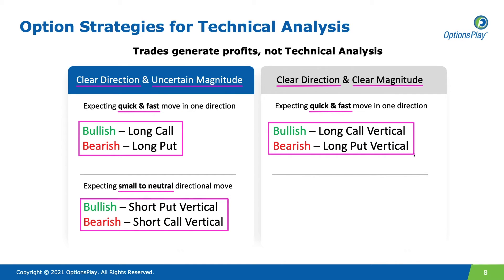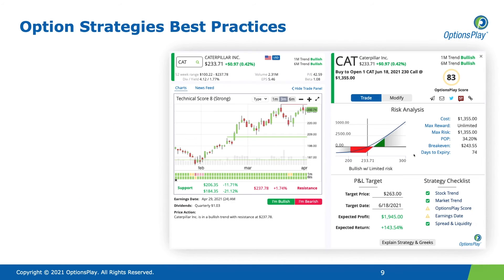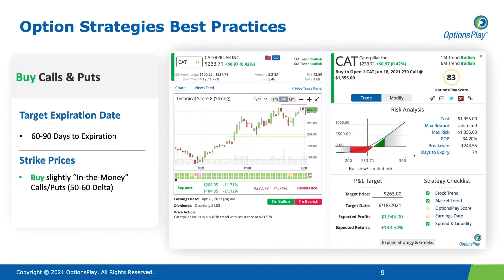When buying a call or put option, we usually go out about 60 to 90 days as a starting point for picking an expiration date. When buying an option, going further out in time is best. You generally want to buy a slightly in-the-money call option, or a put option if you're bullish or bearish. That's the general best practice for buying a call or put option.